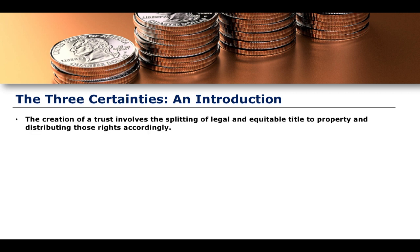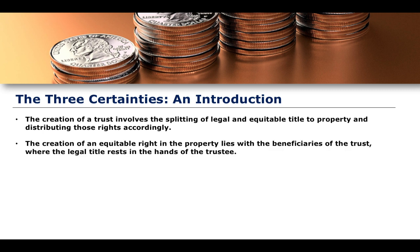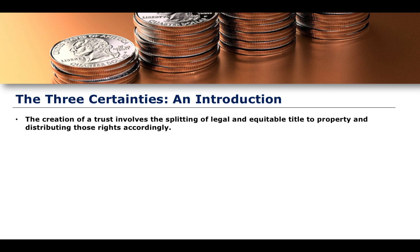So, what are the three certainties? We already know that the creation of a trust involves the splitting of legal and equitable title to property, and distributing those rights accordingly. You distribute the legal title to the trustee, the equitable title to the beneficiary, and then you have the fiduciary relationship which exists between the trustee and the beneficiary. This process requires quite a few steps in order to create a valid trust instrument.